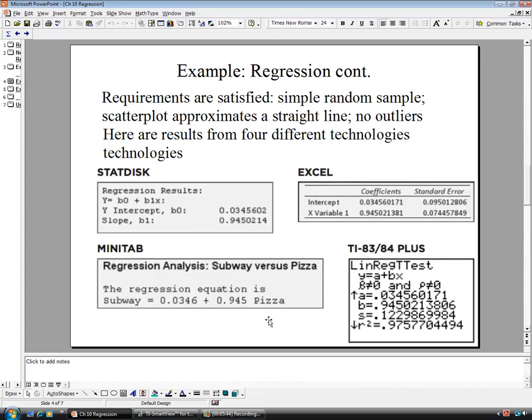What this means is, for every increase of one unit, in this case $1 for pizza, the subway is going to go up by 94.5 cents, or about 95 cents.